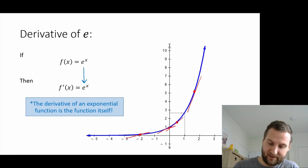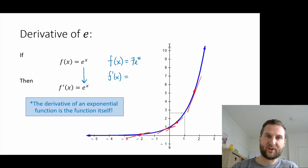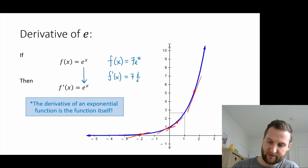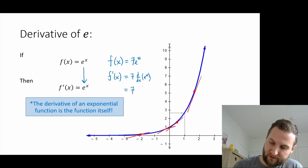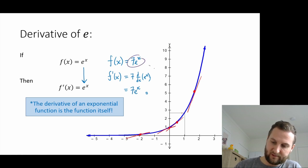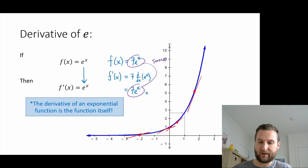Practically speaking, for f(x) equals 7 times e to the x: the 7 is a constant multiple out front, so using the constant multiple rule, f prime equals 7 times the derivative of e to the x. Since the derivative of e to the x is e to the x, the result is 7e to the x. The derivative graph sits right on top of the original function.